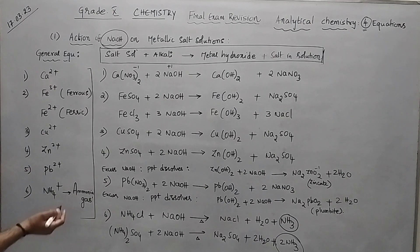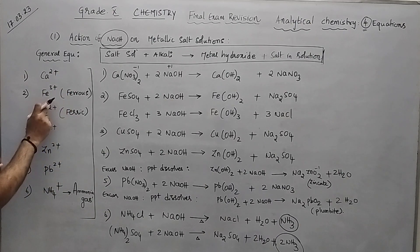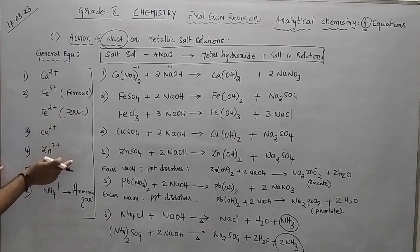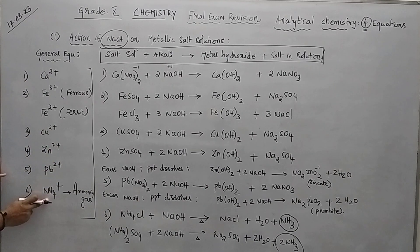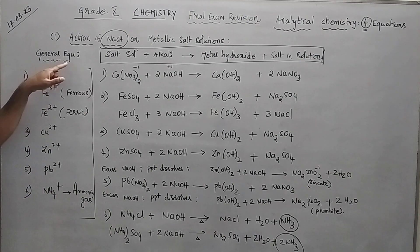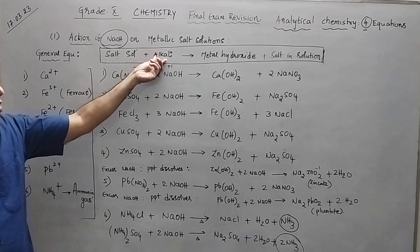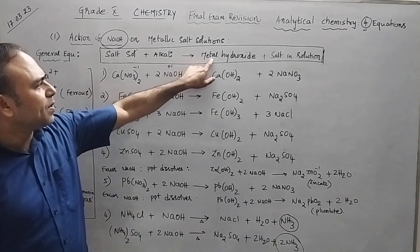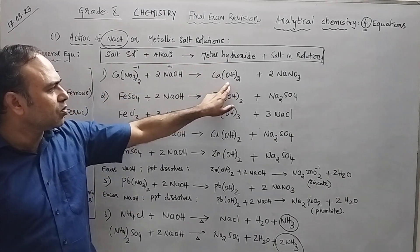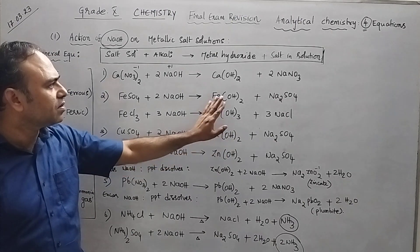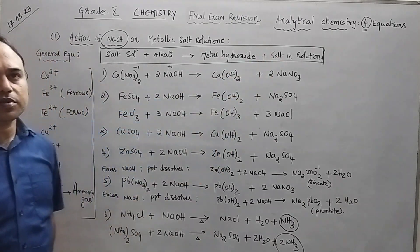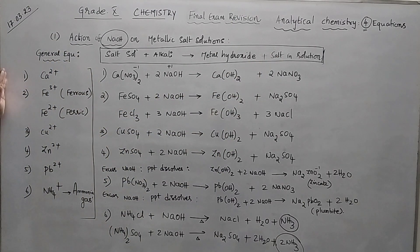How many examples are there? Six examples. What are the six? Calcium, then ferrous, ferric, then copper, zinc, lead, and ammonium ion. Very simple — the general equation is: salt solution plus NaOH gives that particular metal hydroxide (OH⁻) and a salt in solution. Just six examples to cover.